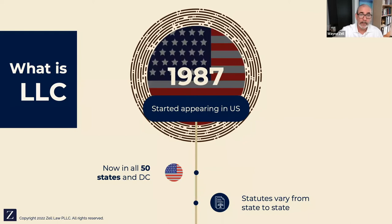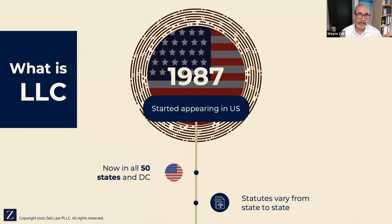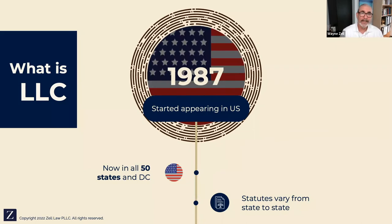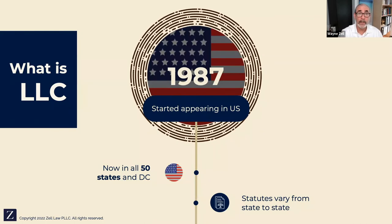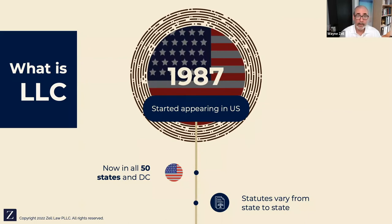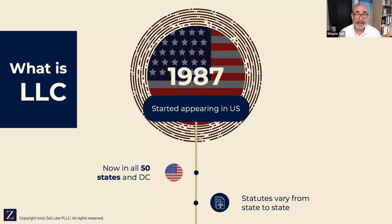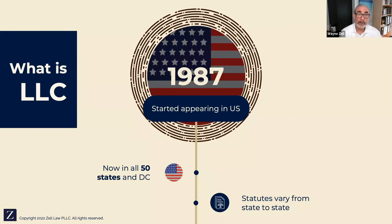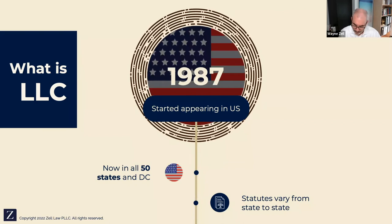When a founder or owner dies, the entity can make a Section 754 election to step up the income tax basis of the assets inside the LLC — including goodwill — to the extent of the decedent's ownership interest. So if I owned 50% of the entity, the entity can step up the inside tax basis and start to deduct goodwill or other assets that are inside the entity. You can't do that in a C-corp or an S-corporation.